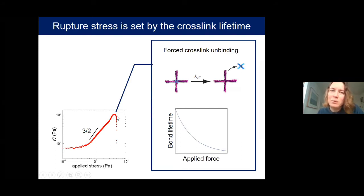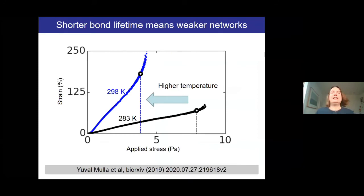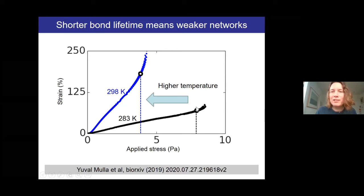At some point, stress stiffening is interrupted because the network breaks. This breakage point is set by the cross-linkers, which have a finite off-rate that is also force-dependent — typically a Bell-law dependence where the lifetime decays exponentially with applied force. Experimentally, if we modulate the off-rate by changing temperature: at low temperature (longer bond lifetime) networks survive to higher stresses; at higher temperature (shorter bond lifetime) they break earlier. It is the bond lifetime that sets network strength.